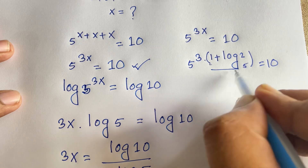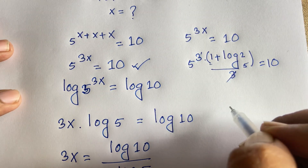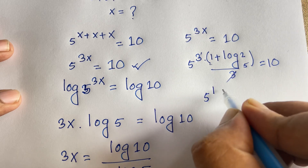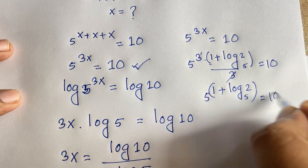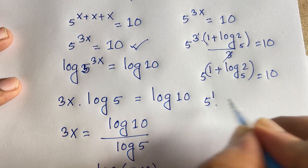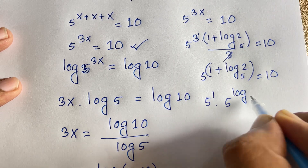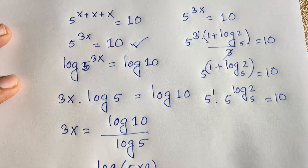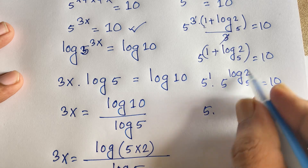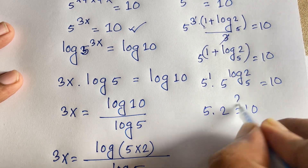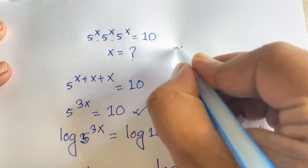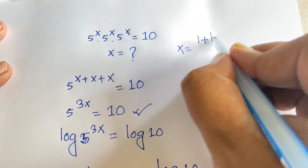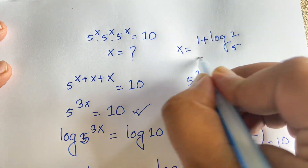Dividing 3x by 3, those cancel, giving 5 to the power 1 times 5 to the power log base 5 of 2, which equals 10. This simplifies to 5 times 2 equals 10, so 10 equals 10. Therefore, x is equal to (1 plus log base 5 of 2) divided by 3. This is the value of x.